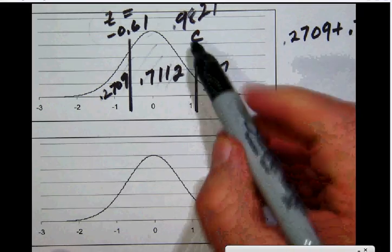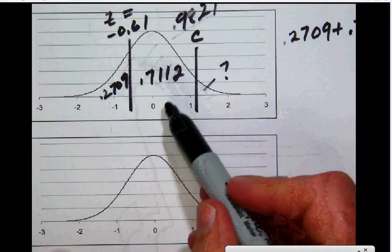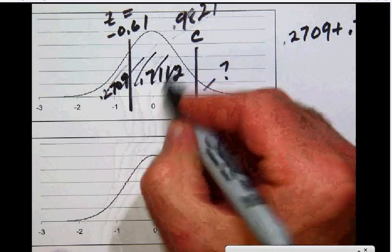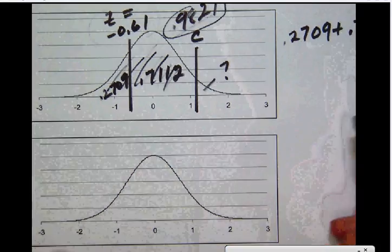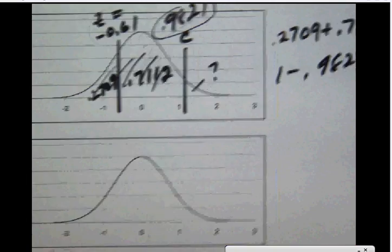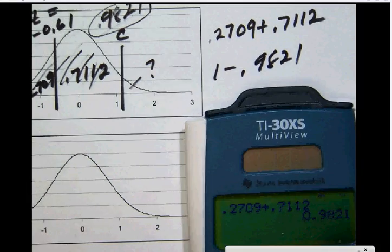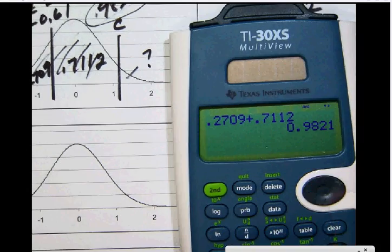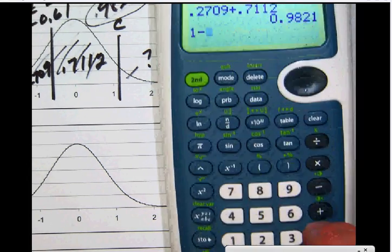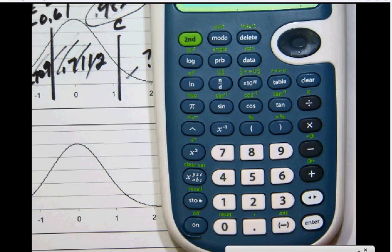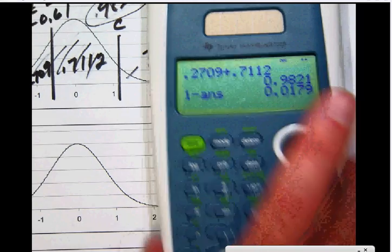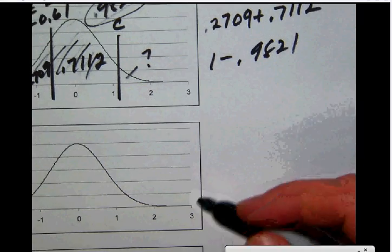But we don't want the area to the left of it. In order to make the z button work, we have to have the area to the right of it. But since all of this area now is 0.9821, we can simply take 1 minus 0.9821. And that's easy to do on our calculator because we can simply go 1 minus, and then go second answer. Down here at the bottom, we can hit the answer button. And that will just simply give us the answer from what we had before, which is going to give us our final answer of 0.0179.